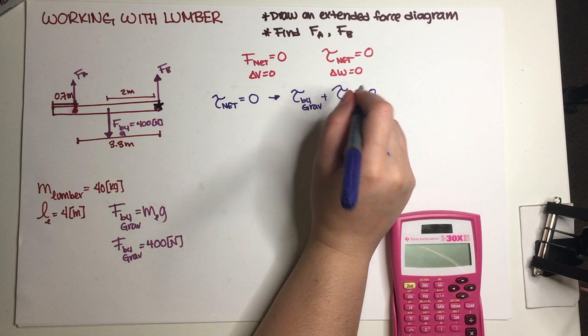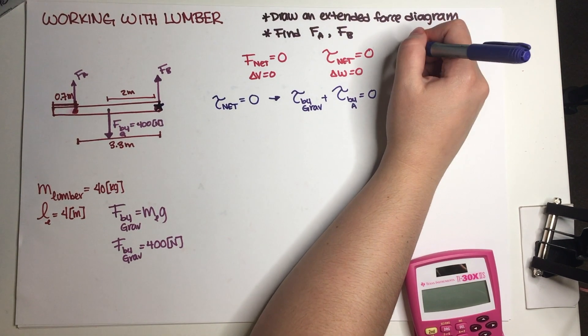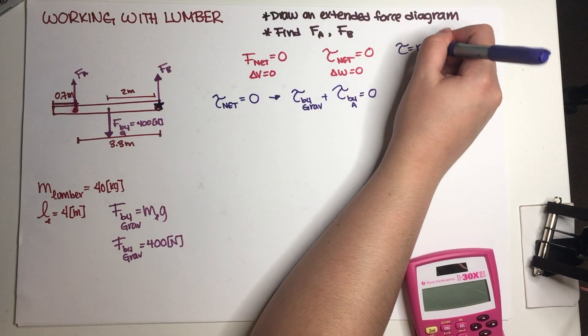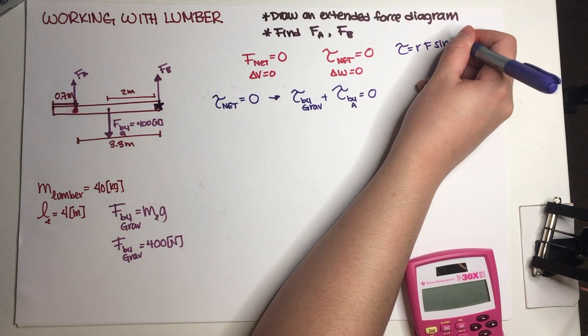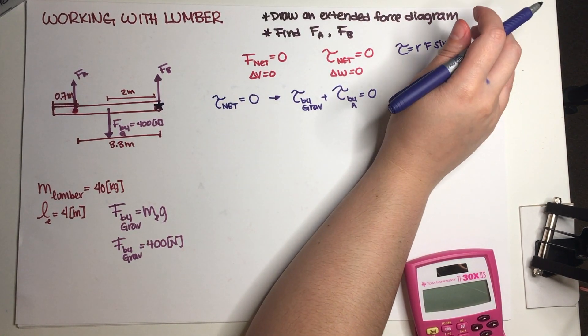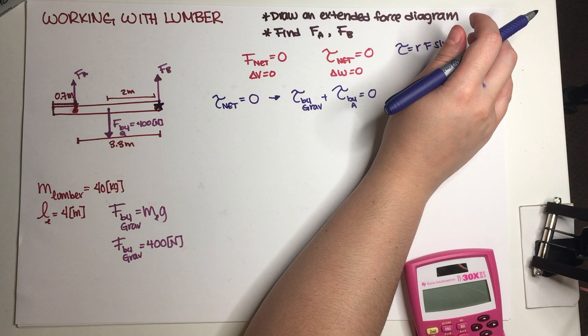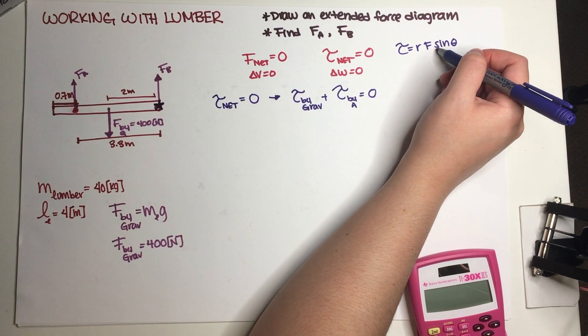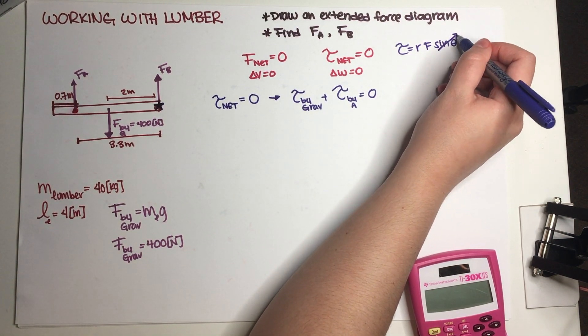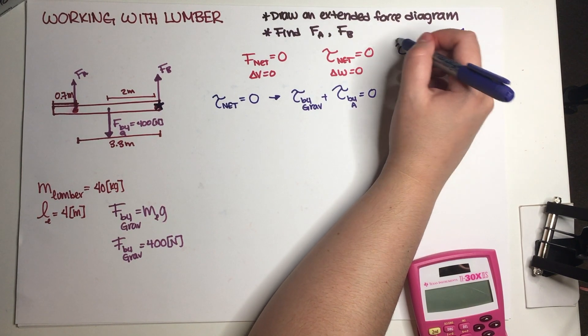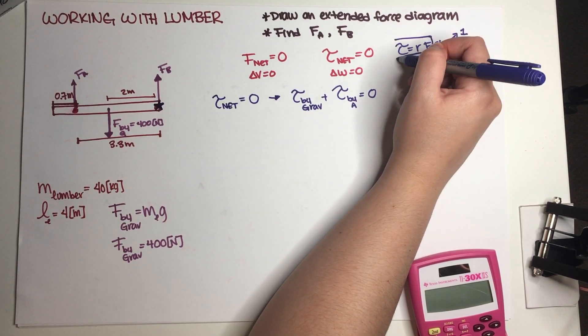Now at this point I'm just going to substitute with our torque equation. So the full equation is r·F·sin(θ). All of these forces are completely vertical, which means that every single time that sine appears is going to be 90 degrees, so this is one.